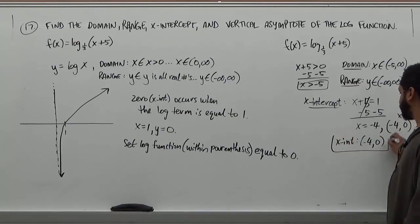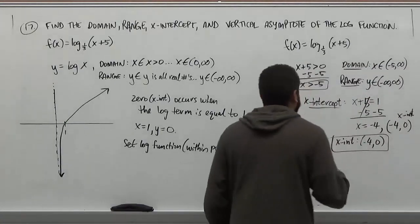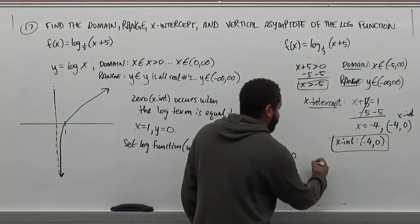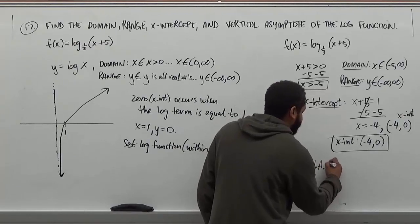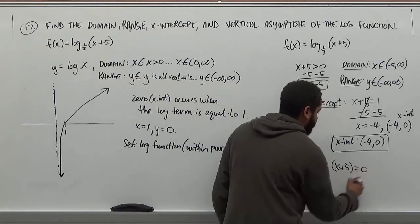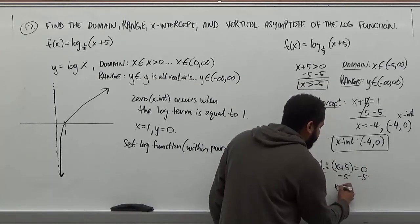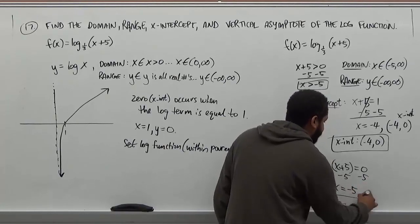Now finally, our final step in this problem is going to be to set the inside of the parentheses equal to zero so that we can get our asymptote. Now the vertical asymptote, in this case, we'll be just setting x+5, which is the inside of the parentheses equal to zero. And here when we solve, we subtract five from both sides, we get our asymptote being x equals -5.